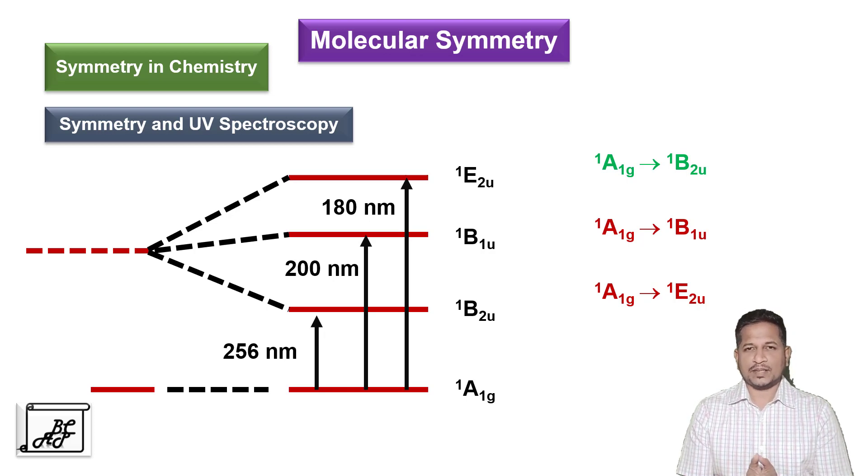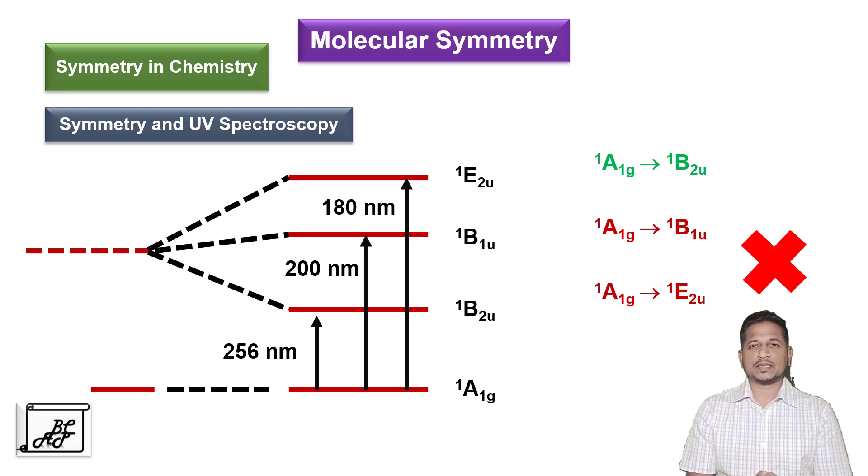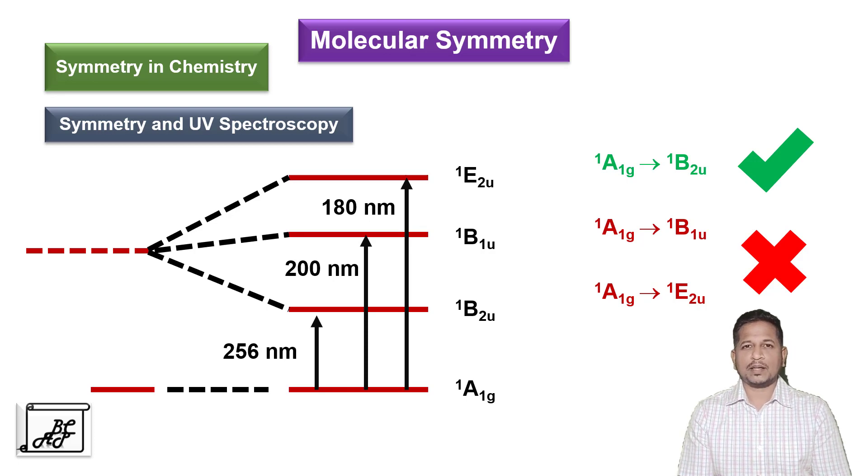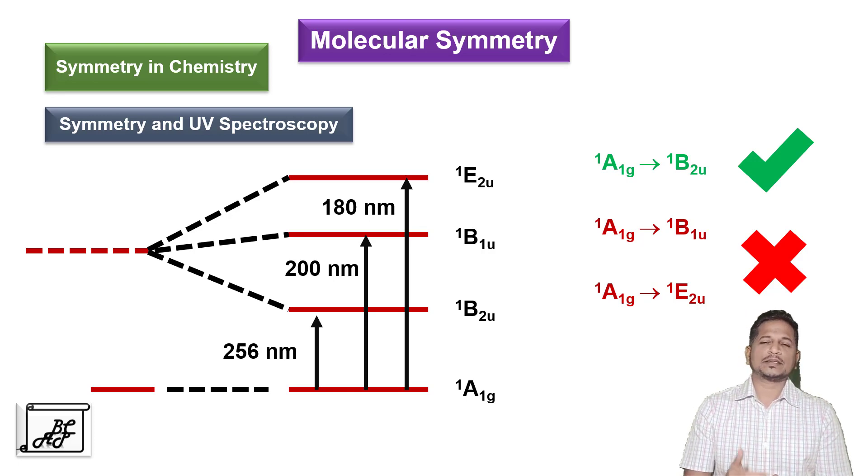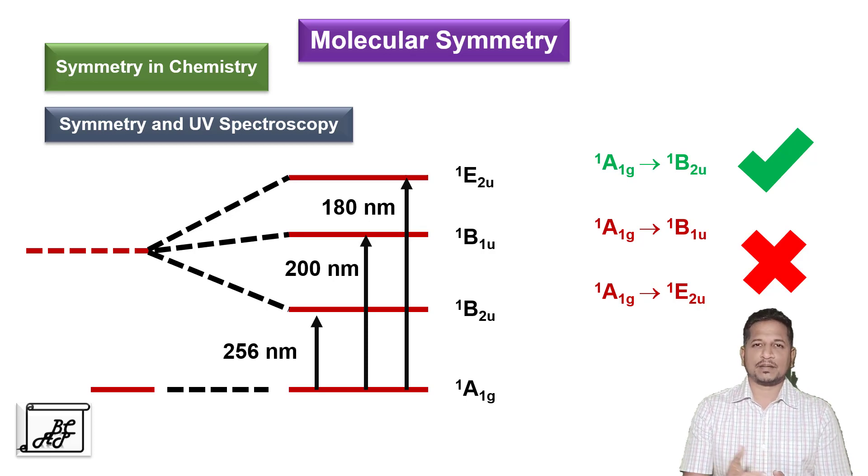Now among these three transitions, the first two transitions are symmetry forbidden, whereas the last transition is the only symmetry allowed transition. So when we study molecular symmetry, it helps to understand how many transitions are symmetry allowed and how many are symmetry forbidden.